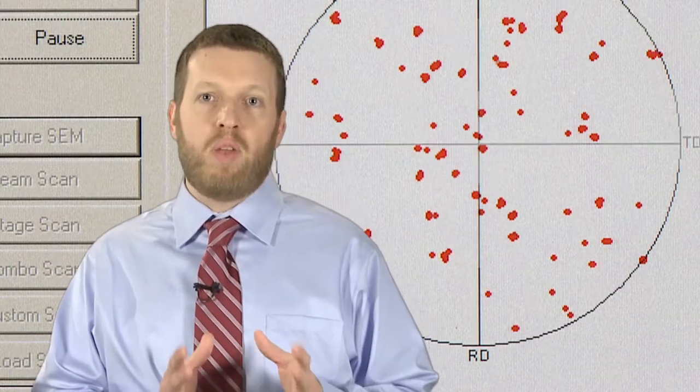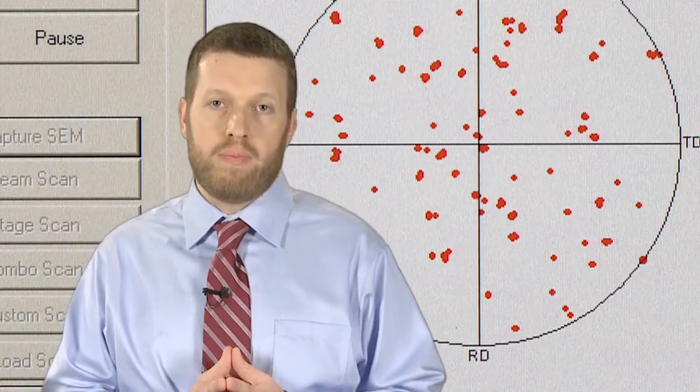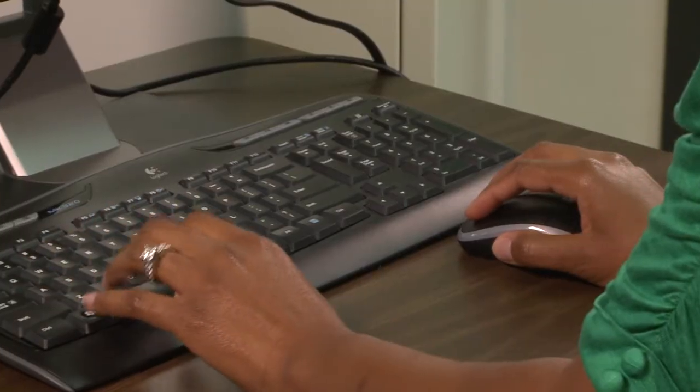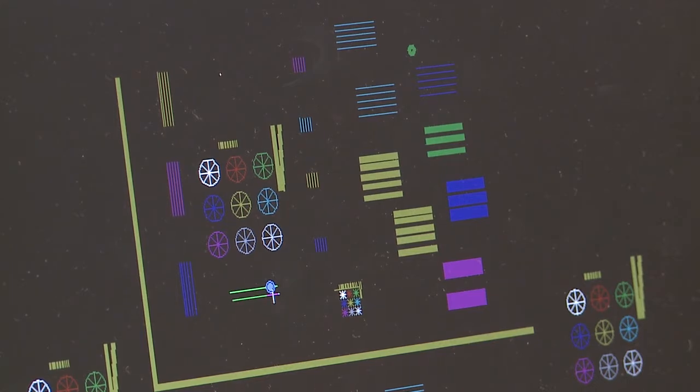One of our newest SEM tools, Electron Beam Lithography, uses a narrow beam of electrons to write lines, traces, and other patterns onto substrates, in order to fabricate micro or nanoscale features.